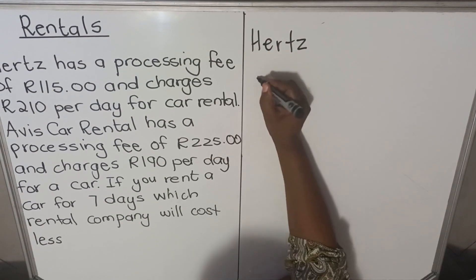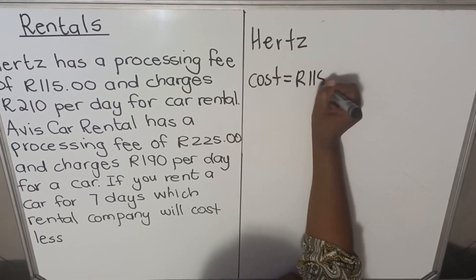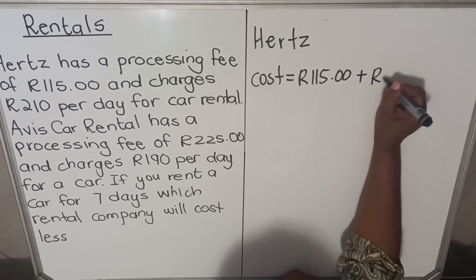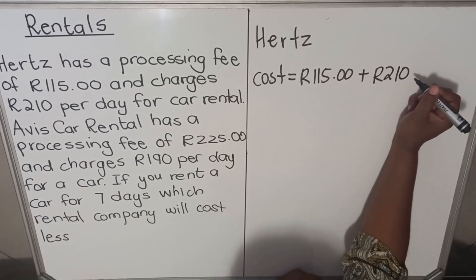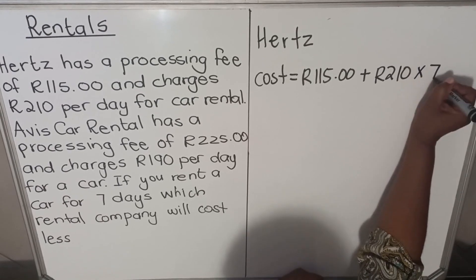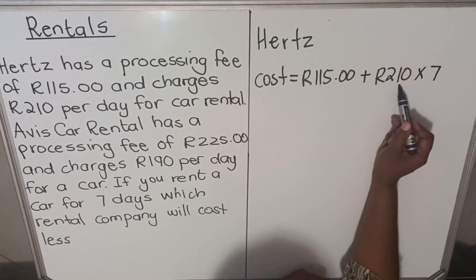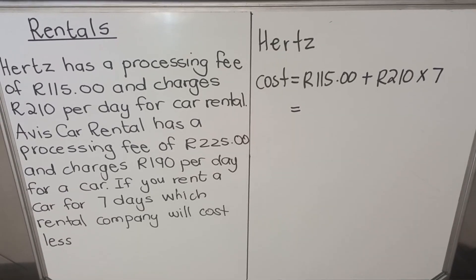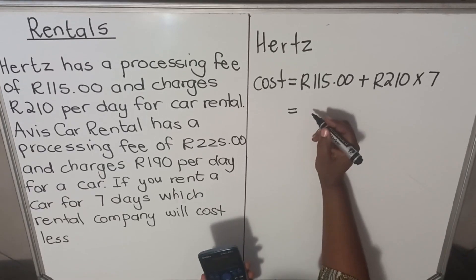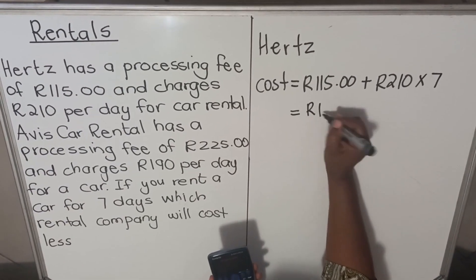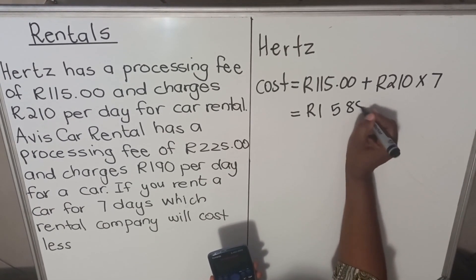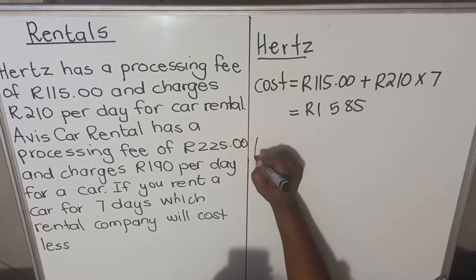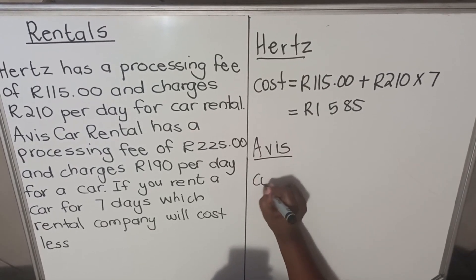For Heads, the cost is 115 plus 210 per day. Since you are renting for seven days, you multiply 210 by seven. Using a calculator, the total amount comes to 1585. That is the total cost for the first company, Heads.